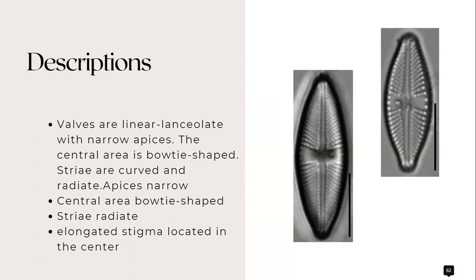Its striae are curved and radiate and its central area is bordered by two to four single areolae on each valve margin. The striae are punctate and radiate throughout. A single isolated stigma-like elongated stigma is located in the central area halfway between the valve center and the margin.